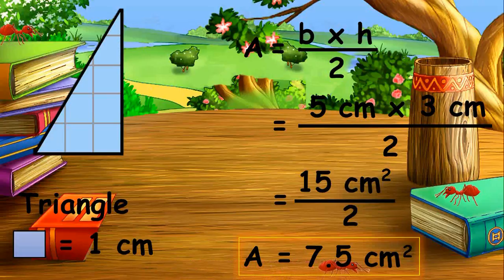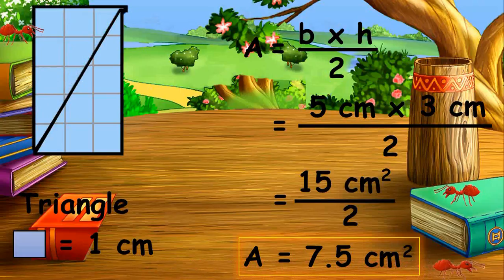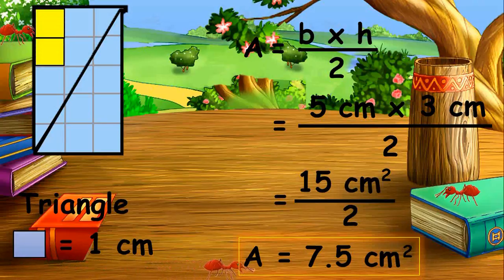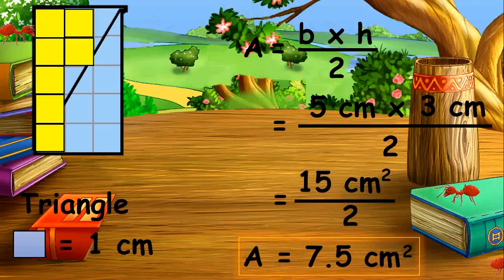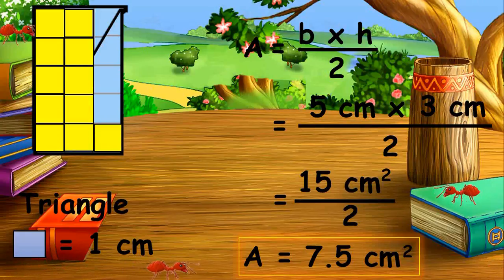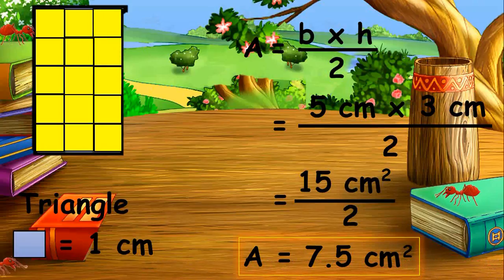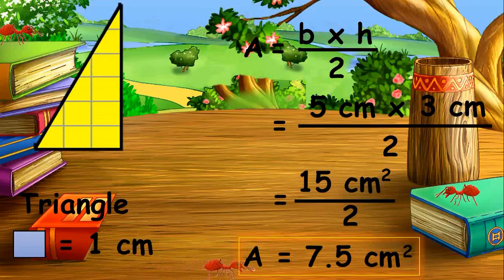To check if the answer is correct, let us make the triangle a rectangle by adding another equivalent triangle. Counting the square units: 1, 2, 3, 4, 5, 6, 7, 8, 9, 10, 11, 12, 13, 14, 15 — there are 15 square units divided by 2, which equals 7.5 square units. Our answer is correct.